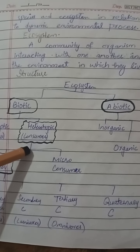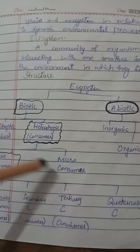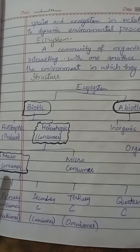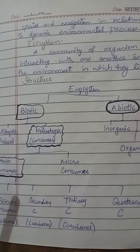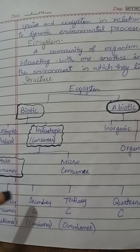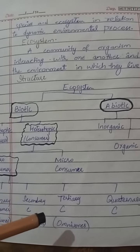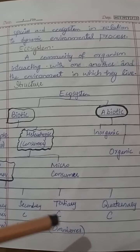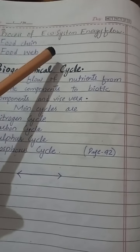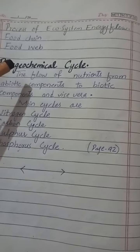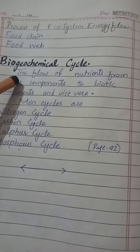Heterotrophic consumers are further divided into micro consumers and macro consumers. Macro consumers are divided into primary consumers, secondary consumers, and tertiary consumers. The processes of the ecosystem include energy flow, food chain, and food web.